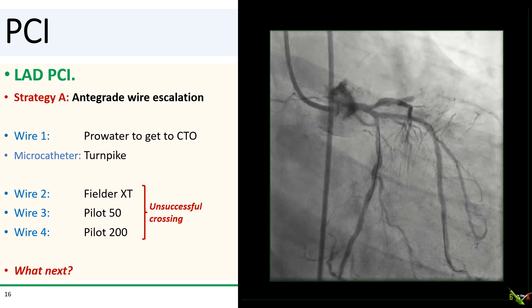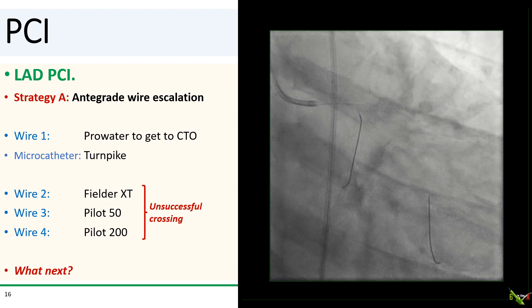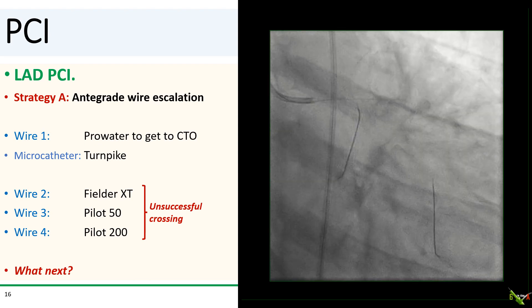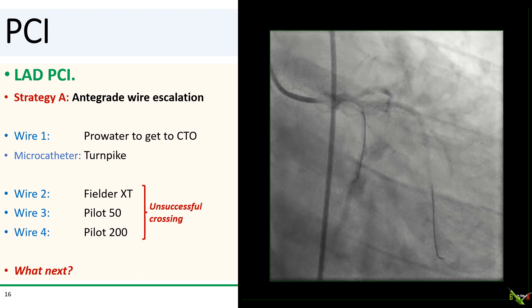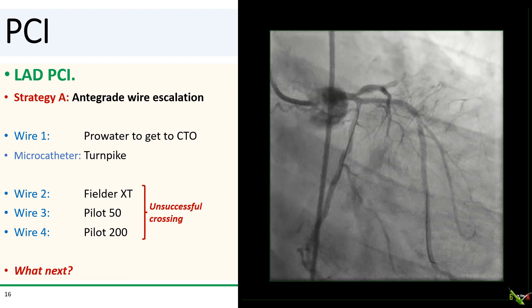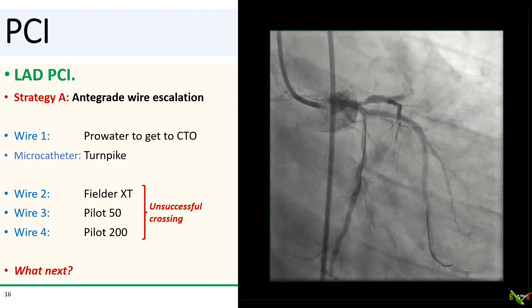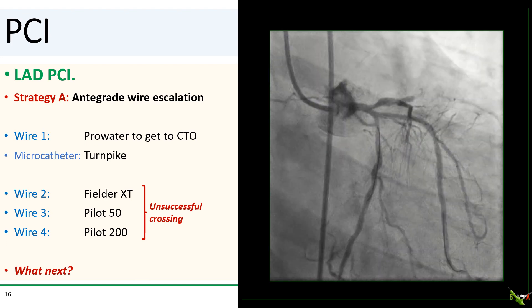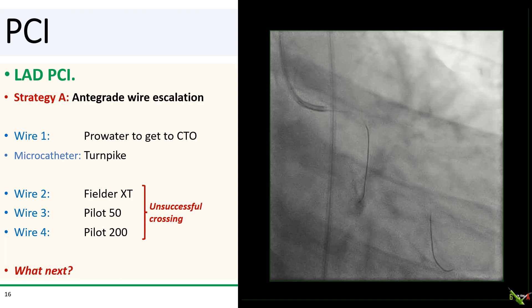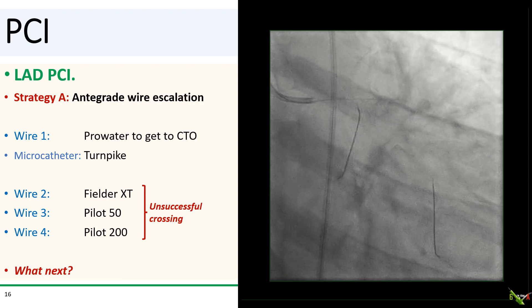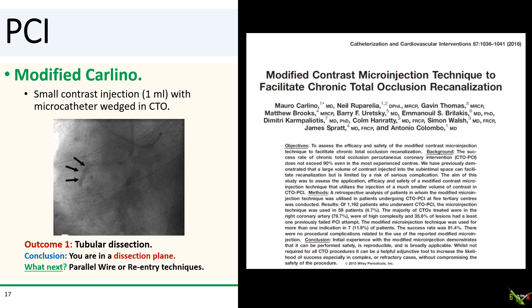Now on to the main course — the LAD. Our plan called for anterograde wire escalation. We used a Prowater wire to get a Turnpike microcatheter to the CTO. Thinking there might be a microchannel, we first used a Fielder XT wire to probe the CTO, but without success. We moved up to a Pilot 50, which was similarly unsuccessful. A heavier Pilot 200 wire couldn't cross either, although it did penetrate the proximal cap and entered perhaps halfway into the occlusion. Should we go to dissection re-entry, or switch to Gladius Mongo and knuckle around the CTO and re-enter? I actually decided to try the modified Carlino technique first.